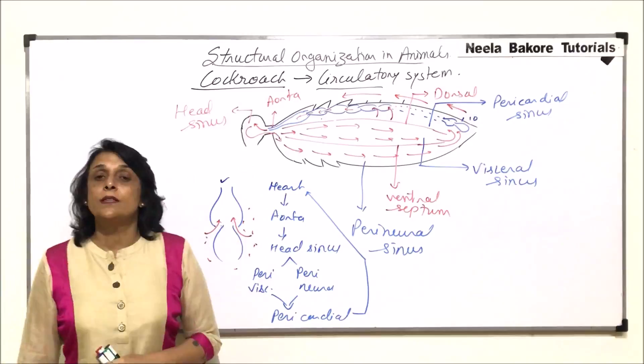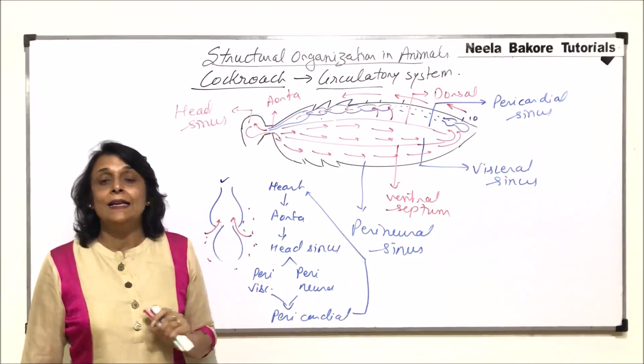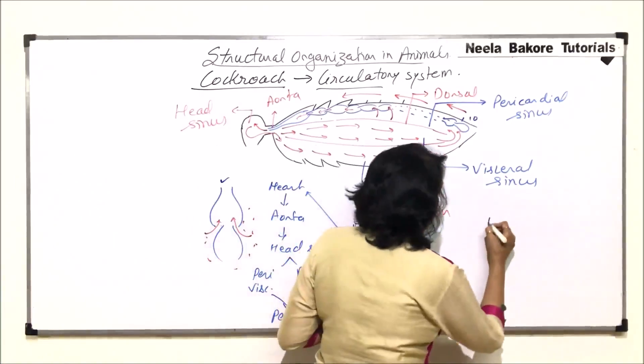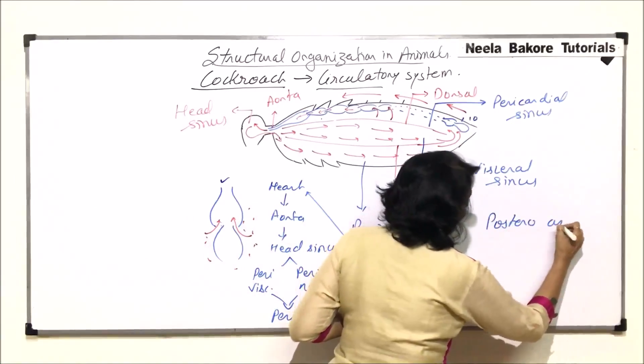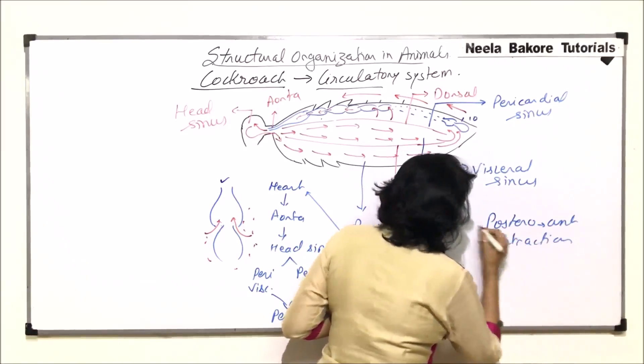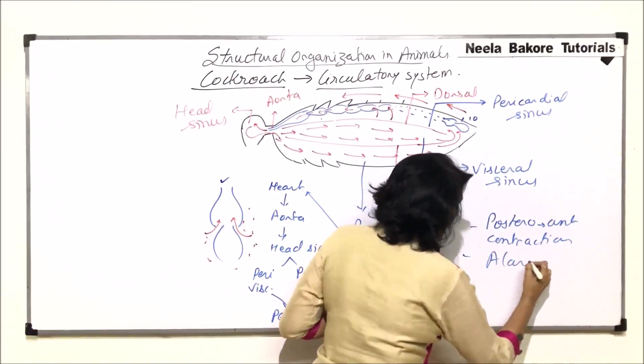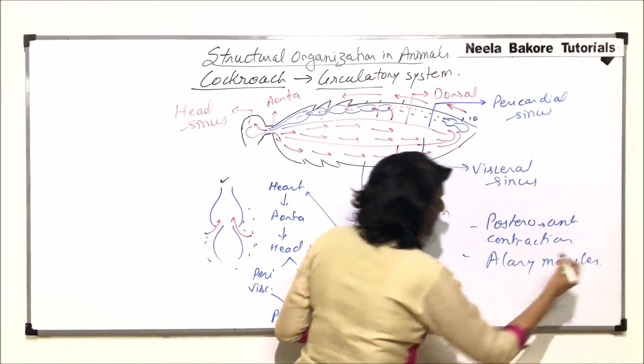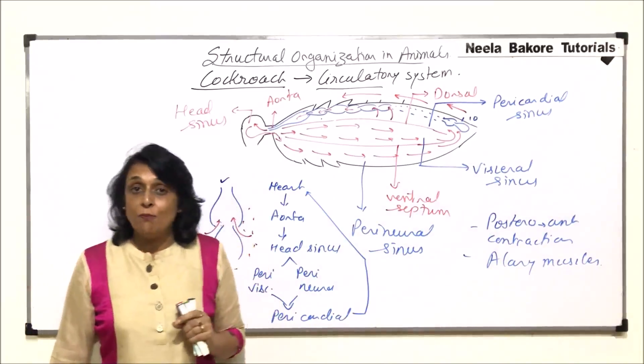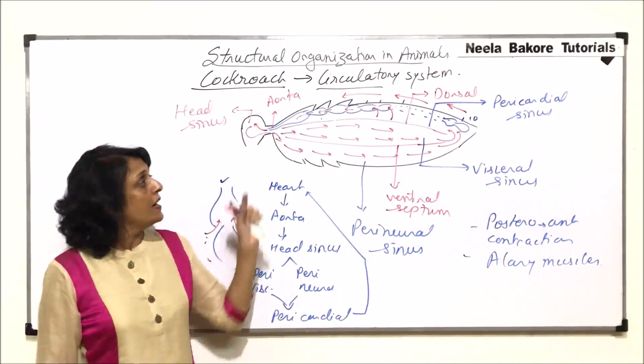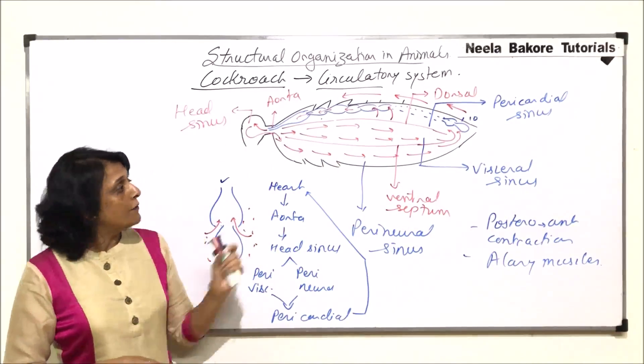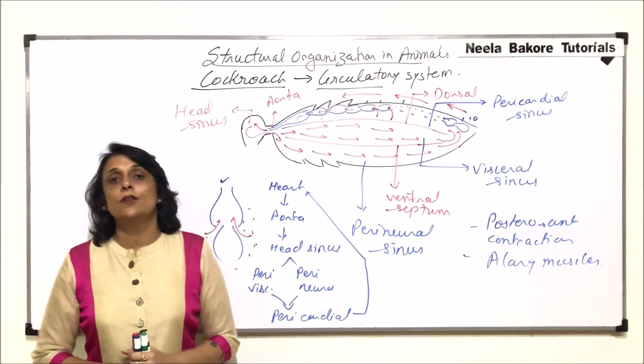So this is how the circulation takes place. Heart is 13 chambered. Contraction of heart is posterior anterior. This is how it contracts. And it is held by alary muscles. The alary muscles are paired which are attached on either side of each chamber. 13 chambers are there. And it is a tube like structure. So we call it a tubular heart. So after discussing the circulatory system.